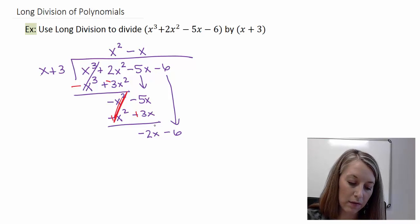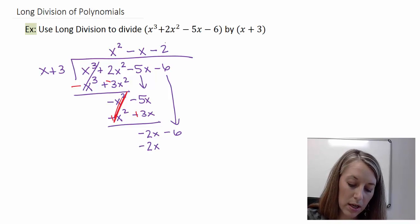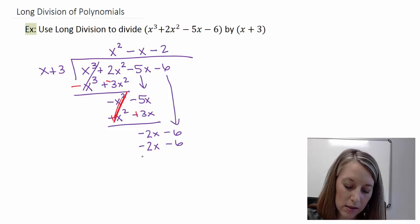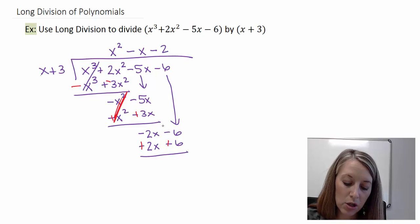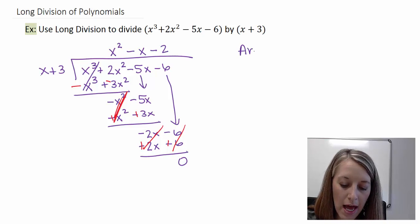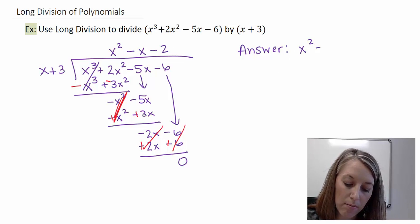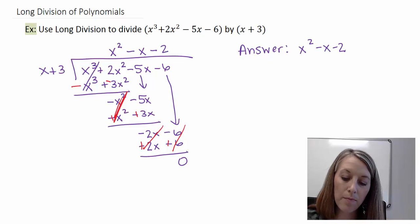X times what gives me negative 2x? So negative 2. X times negative 2 gives me negative 2x, and 3 times negative 2 gives me negative 6. Subtract — switch my signs and add. My 2x's cancel out, my 6's cancel out, so we're left with no remainder. If it purely asks for long division, our answer is the quotient x squared minus x minus 2. Let's also talk about how we can check this.